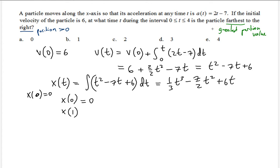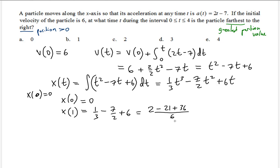Now x of 1: substituting t equals 1, we get 1/3 — since 1 cubed is 1 — minus 7/2 — since 1 squared is 1 — plus 6. Using an LCD of 6, that becomes 2 minus 21 plus 36 over 6, which gives 17 over 6. So x(1) equals 17/6, which is the first positive value we've found.